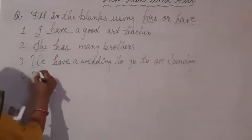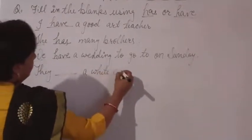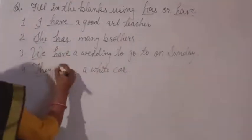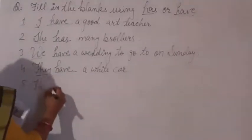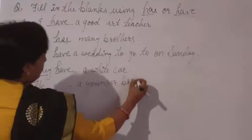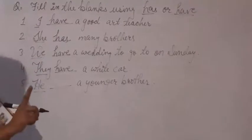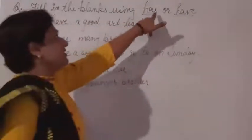Fourth: 'They have a white car.' Here, the subject is they, indicating plural, so we use have. Fifth: 'He has a younger brother.' He is a singular subject, so we use has. You can easily choose has or have for each subject.